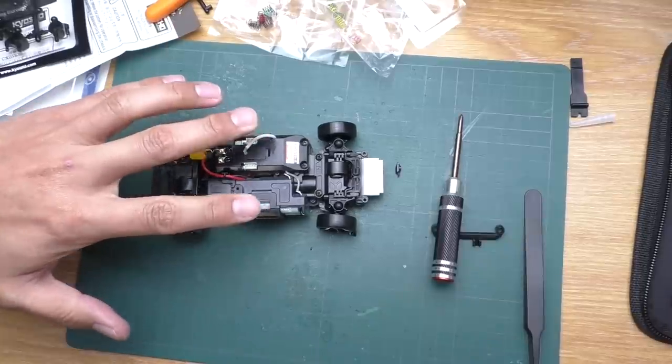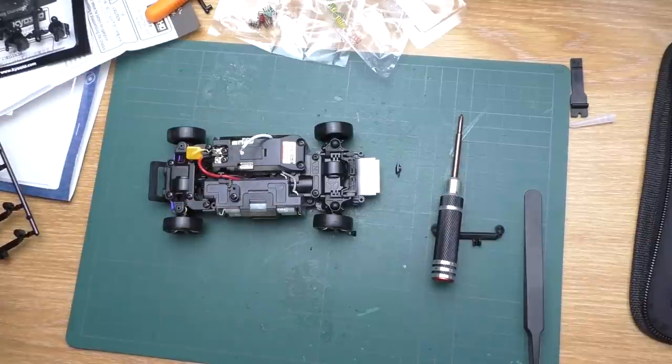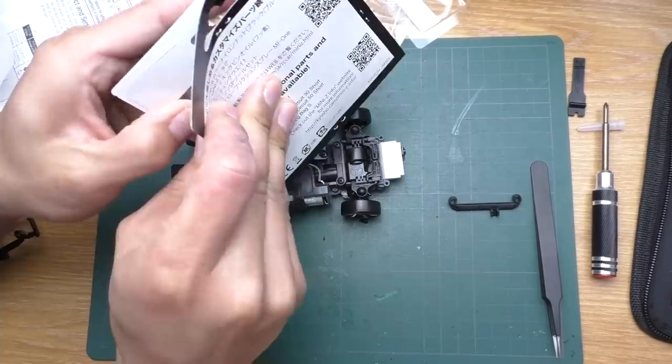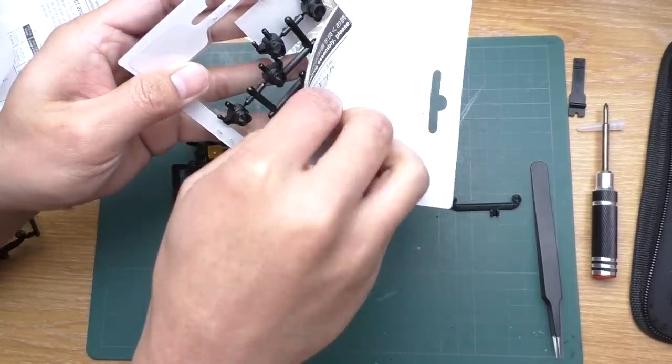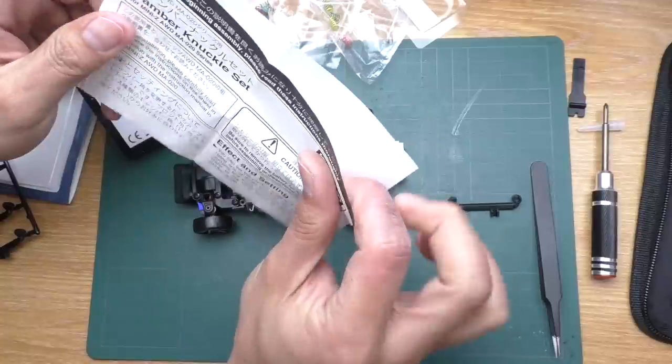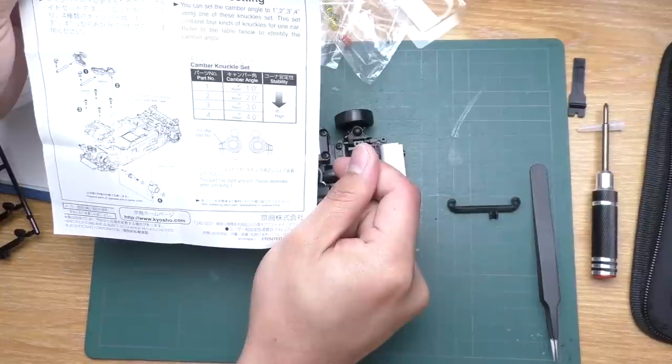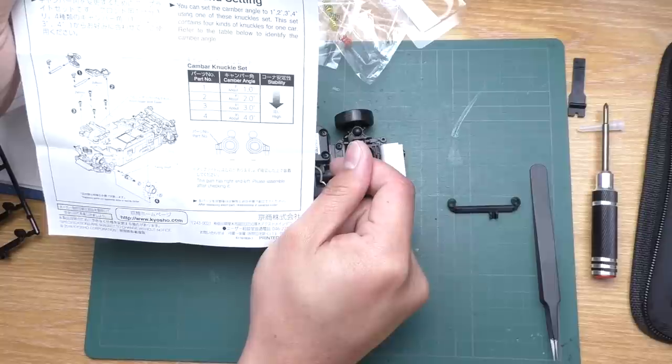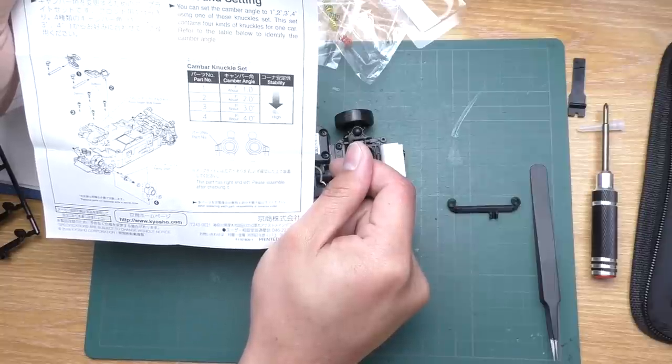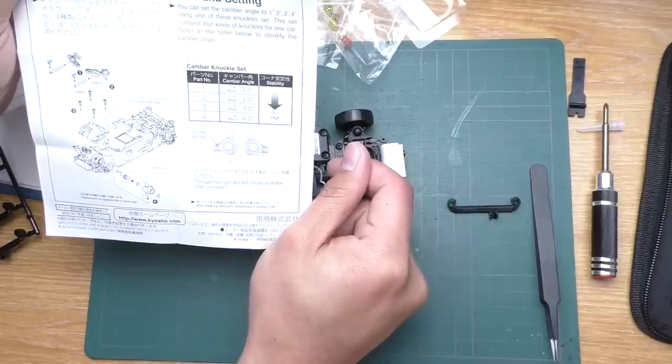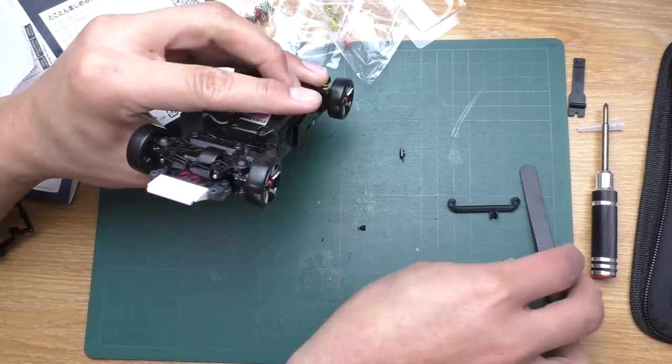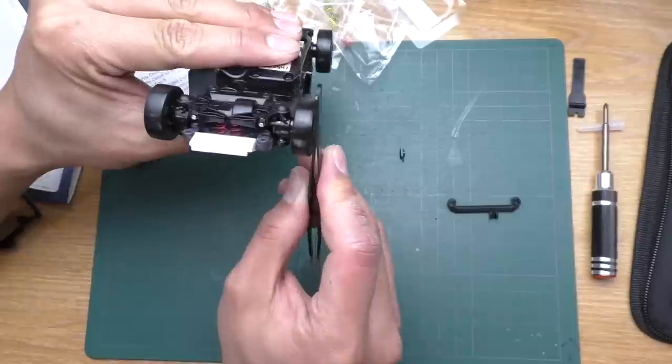With the front toe-out, it can turn in much easier, however now it is pretty nervous to drive. So next, let's do the camber. The documentation says one degree to four degree camber. The more camber it has, the more stability it has.